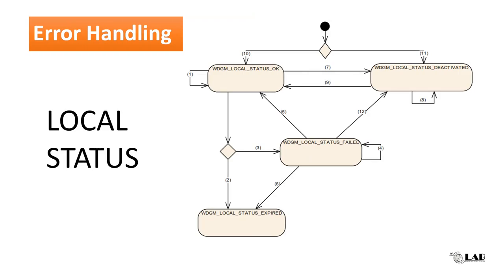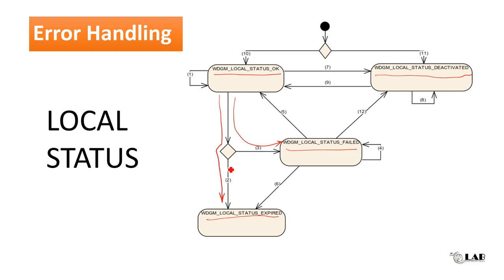For error handling, let's first look at the local status. Based on the configuration, status transitions will change. At the beginning, the WdgM status will be OK. When a failure occurs, it will transition following either path 2 or path 3. Going from OK to Expired also depends on the configuration. If the failure tolerance is set to 0, it follows the second flow. If the failure tolerance is greater than 0, it follows path 3 and goes to the Failed state, and based on tolerance can go to Expired. When the supervised entity shows correct behavior, it can also go back to OK status.